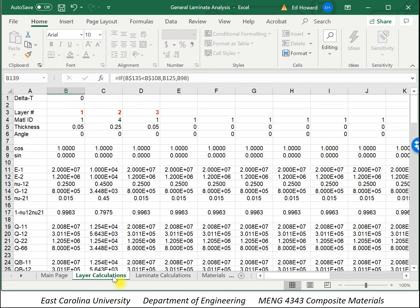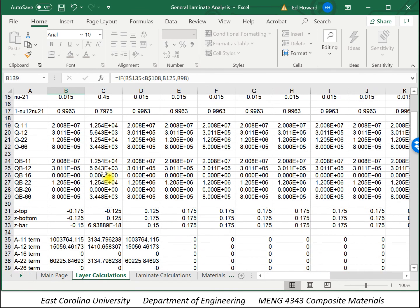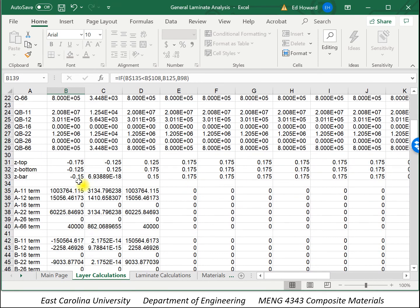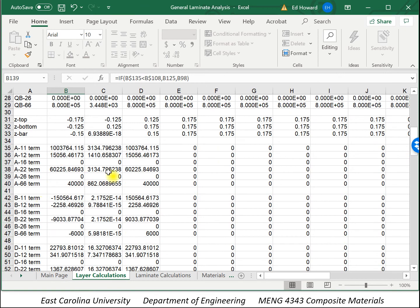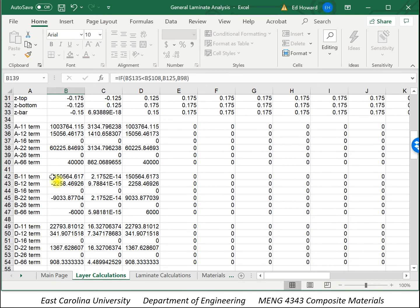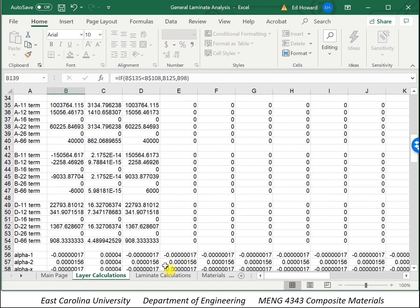And so for the layer calculations, just like before, we've generated the Q-bar matrix, the A terms for the A matrix, the B matrix, and the D matrix.